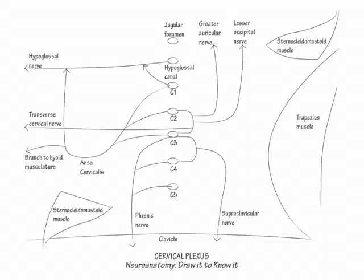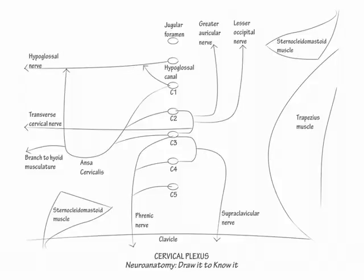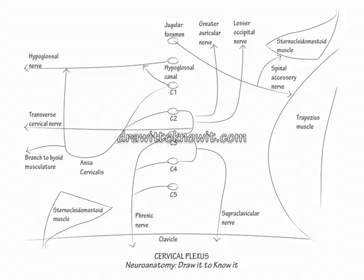Now let's draw the motor nerves from the cervical plexus that pass into the posterior cervical triangle. C1 to C4 form cranial nerve 11, the spinal accessory nerve. The C1 to C4 fiber bundle ascends the spinal canal, passes through the foramen magnum to enter the cranium, and then exits through the jugular foramen as cranial nerve 11, the spinal accessory nerve. Indicate this nerve passes posteriorly to innervate the trapezius muscle, which elevates the shoulder, and also the sternocleidomastoid muscle, which turns the head. This completes our drawing of the cervical plexus.